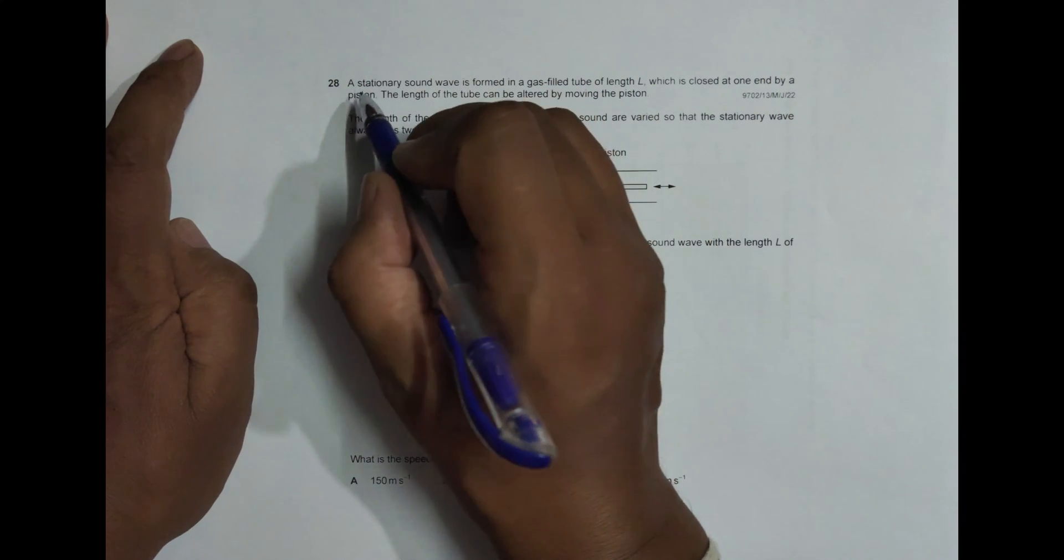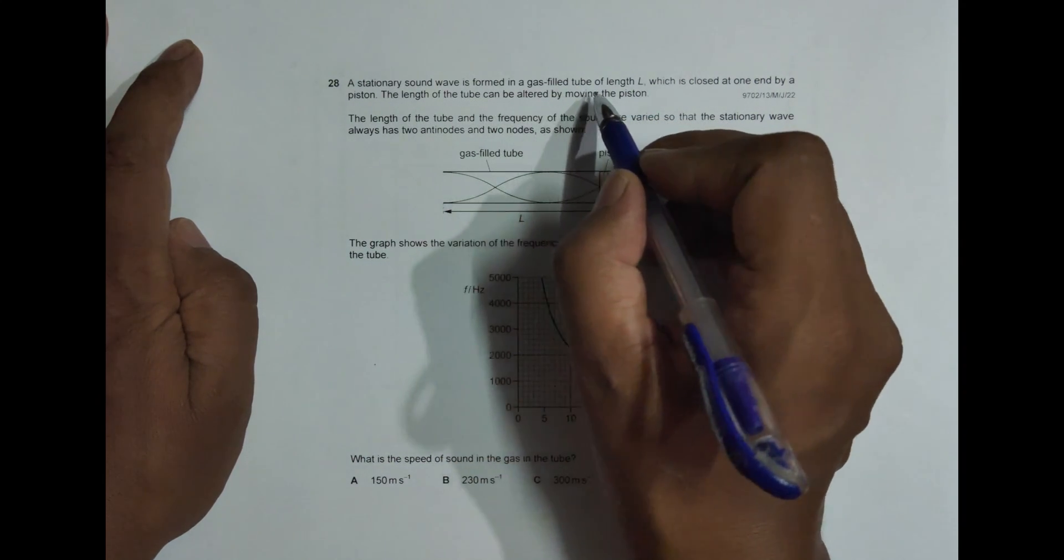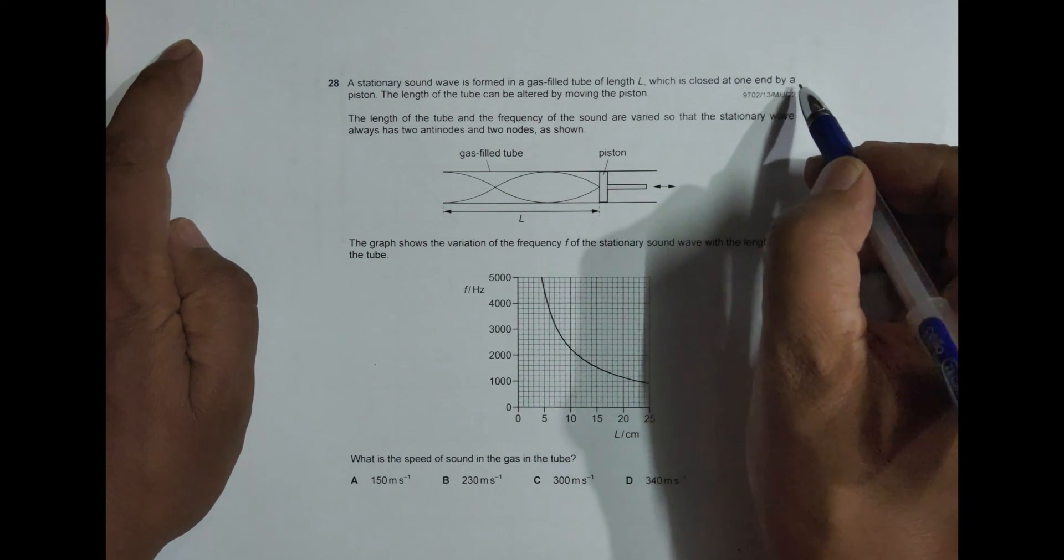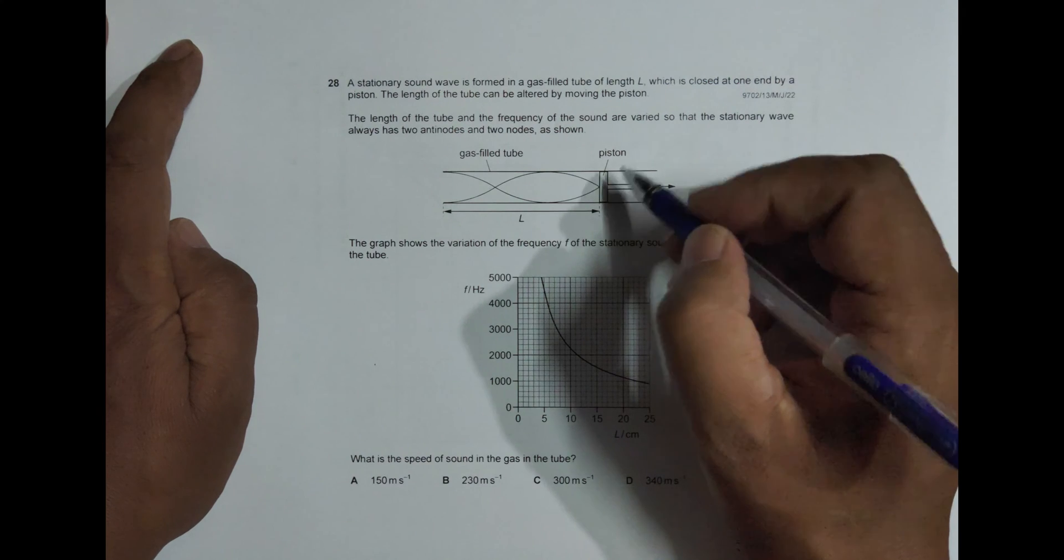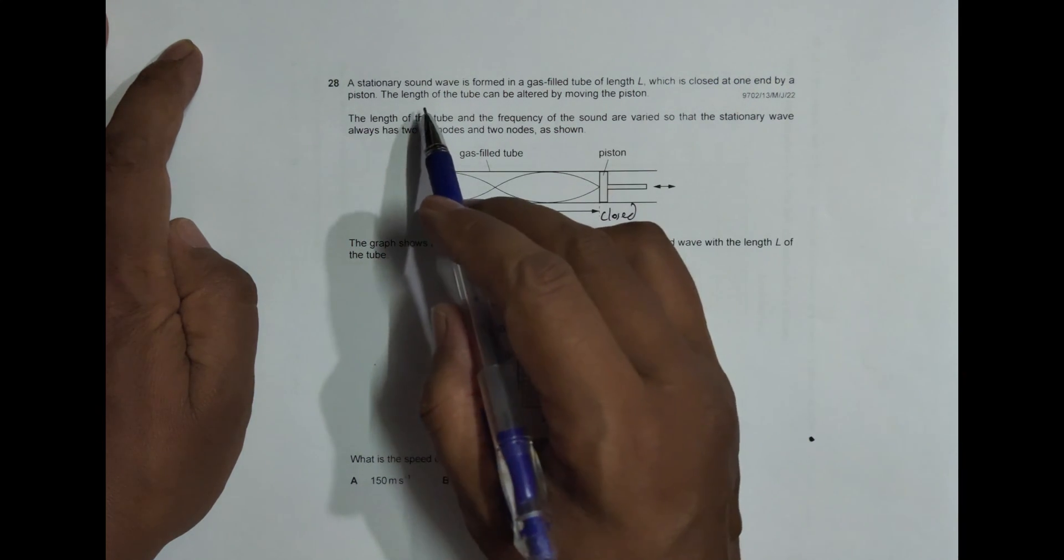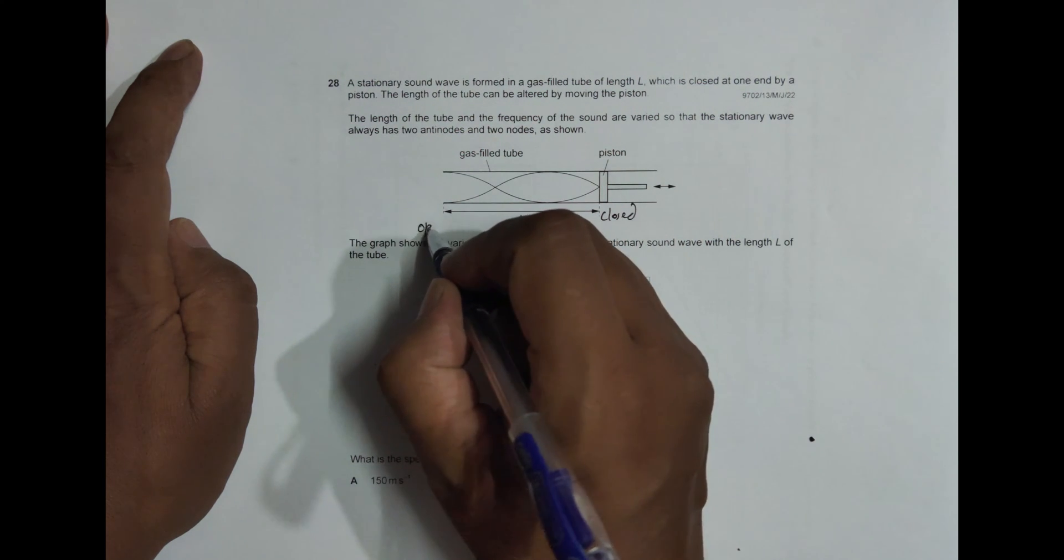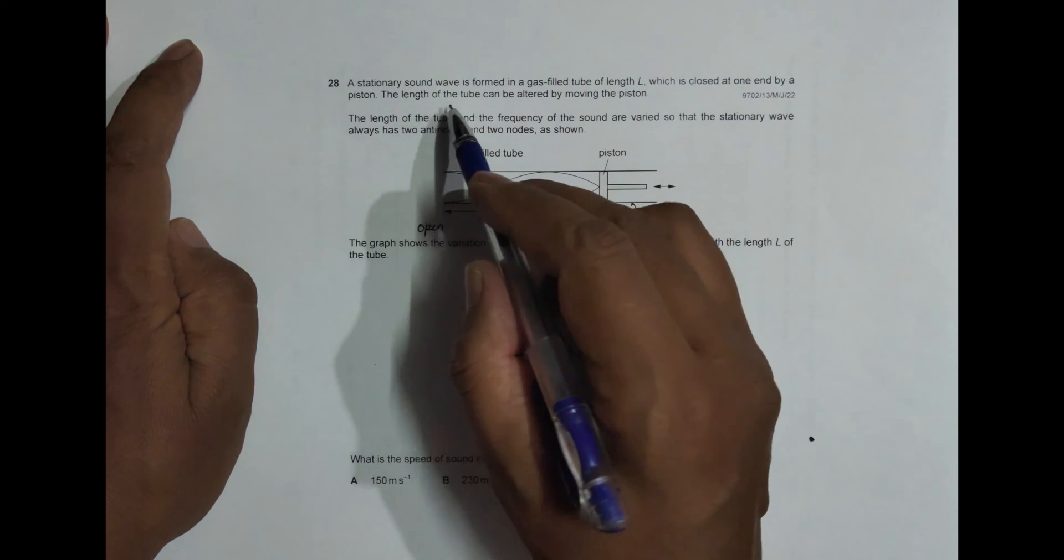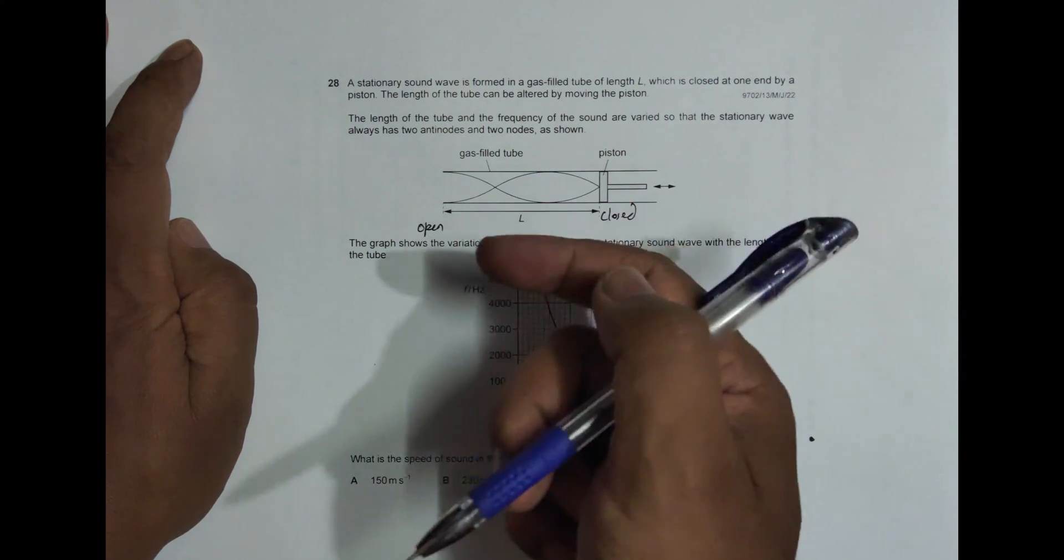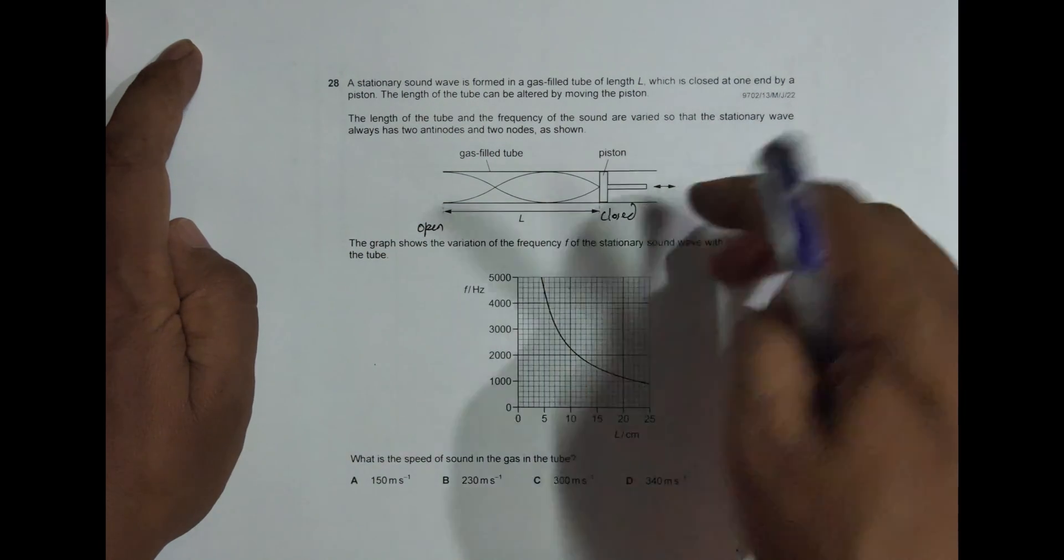It says a stationary sound wave is formed in a gas-filled tube of length L which is closed at one end by a piston. So this is the closed end and this is the open end. The length of the tube can be altered by moving the piston. If we move it like this length decreases, if you move like this length increases.